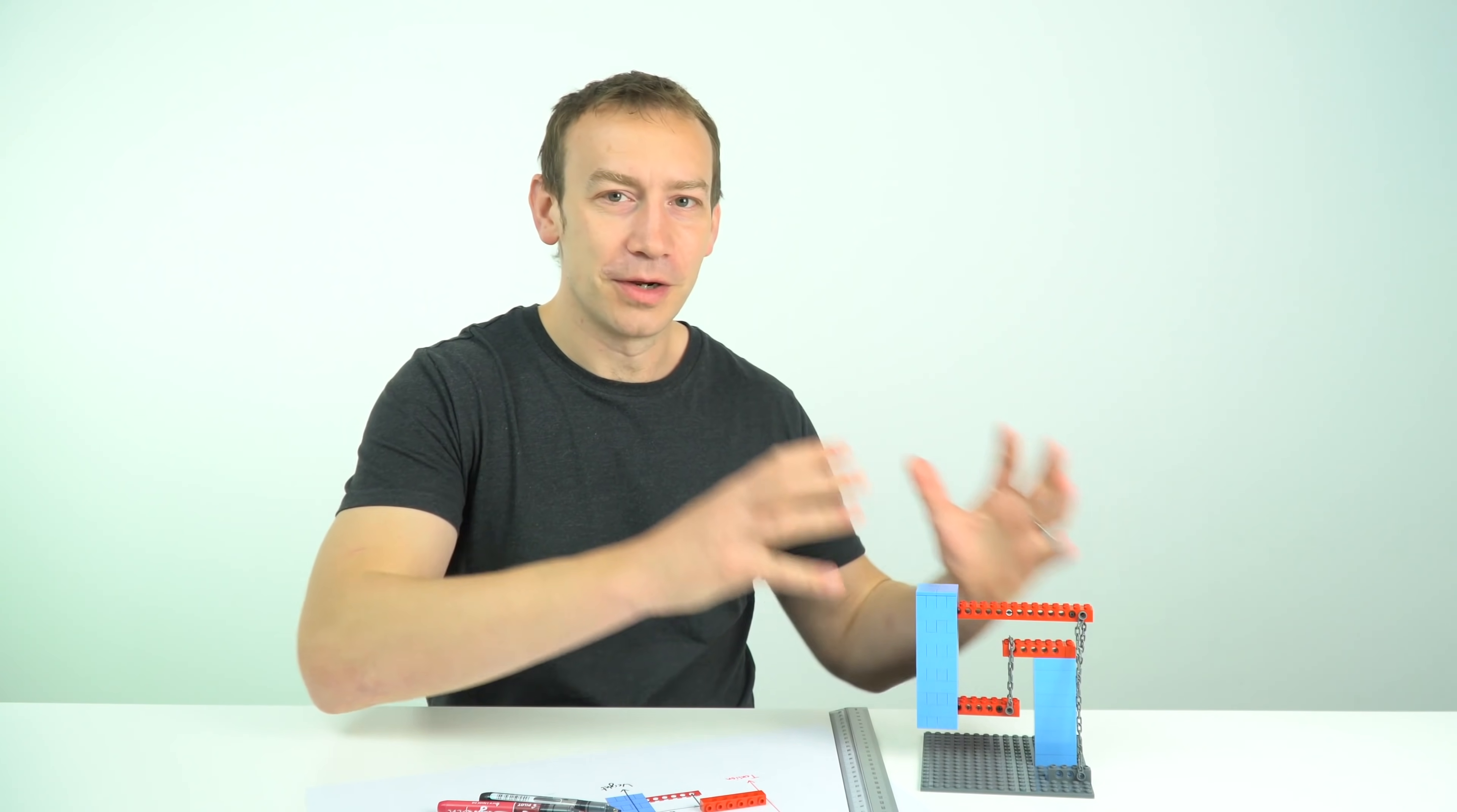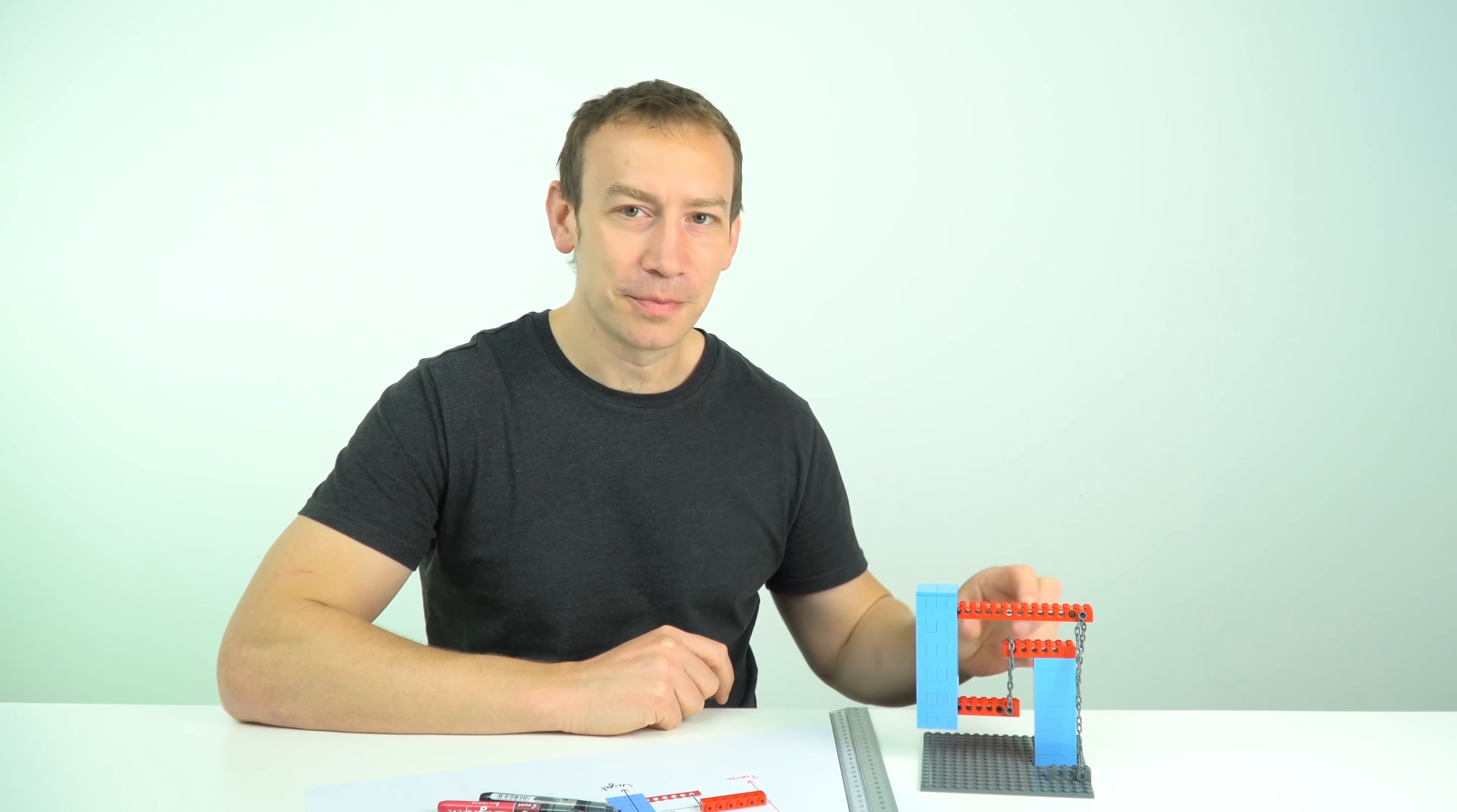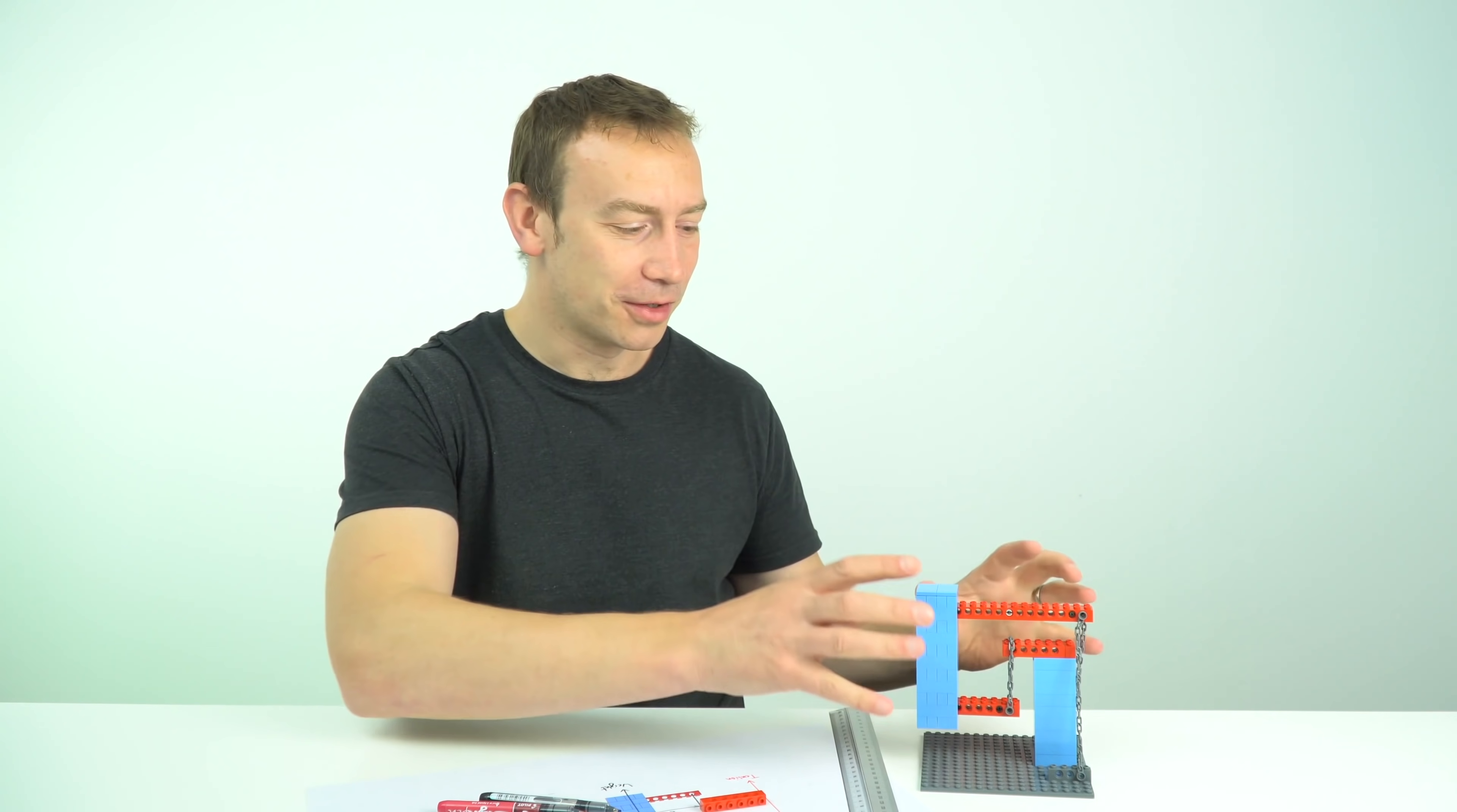So that's just a summary of the physics behind this structure. We've got the weight times the distance from the pivot and that must be equal to the tension in the ropes times the distance from the pivot. And provided they're balanced the structure remains stable.